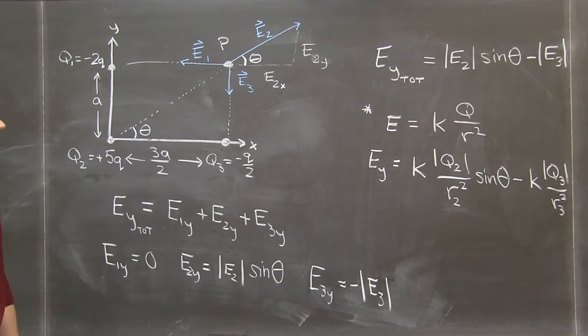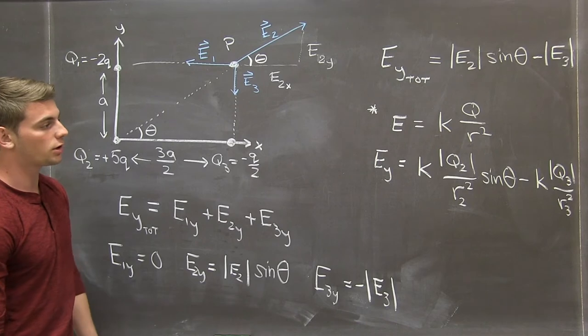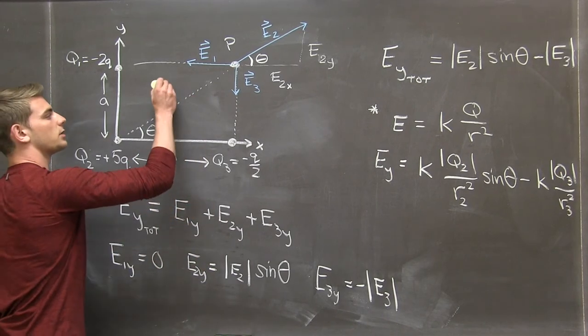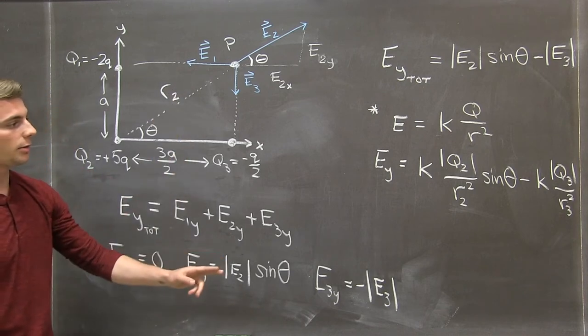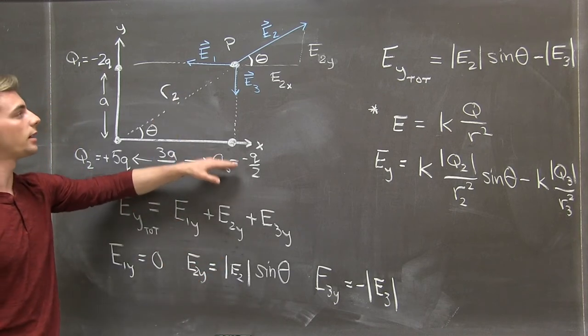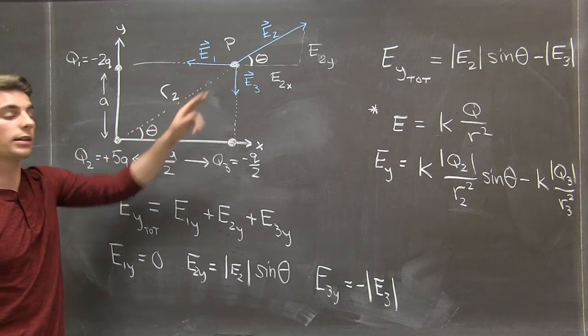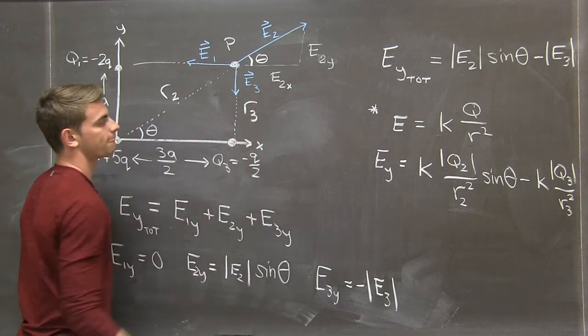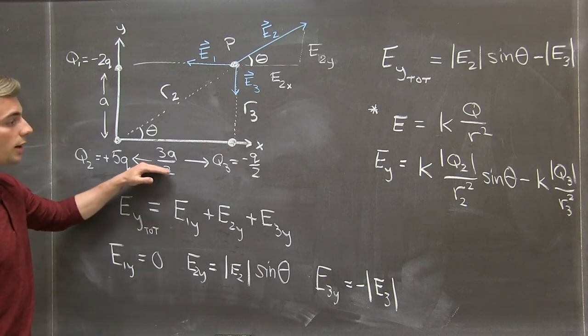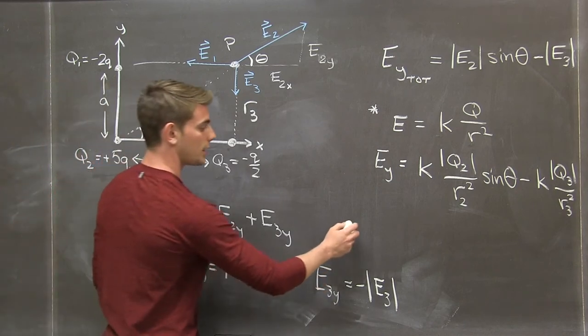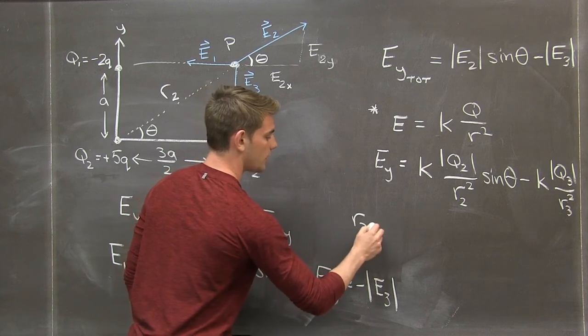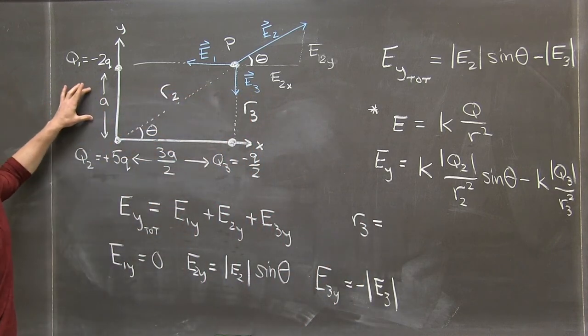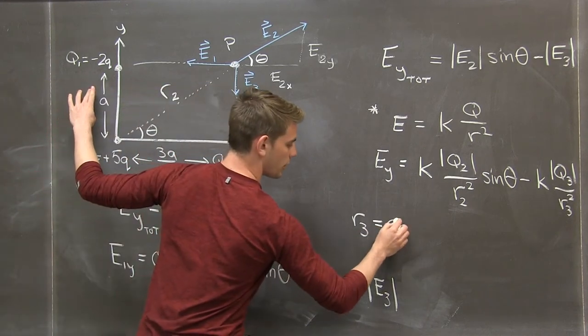r2 is the distance between the charge q2 and the point p, that would be this quantity here. And r3 is the distance between q3 and the point in space we're considering at point p, that would be here. So in terms of quantities given, we see that r3 is equal to a. That one's the most straightforward.